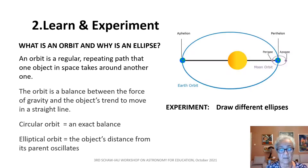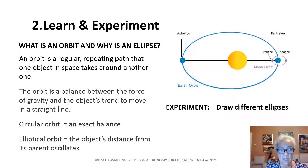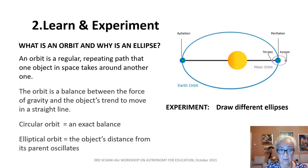What is an orbit? Students understand that an orbit is a regular repeating path that one object in space takes around another. The orbit is a balance between the force of gravity and the object's tendency to move in a straight line. A circular orbit appears when the balance is exact, but usually the orbit is elliptical because the object's distance from its parent body oscillates.